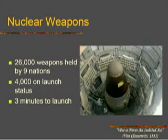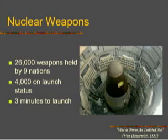Then we come to nuclear weapons — these weapons are in a class by themselves. They're not operated by military agencies but by separate agencies, and that's where you'll find them if you start doing research. It's now 26,000 weapons, and of those, 4,000 are in launch status — 2,000 held by the Americans and 2,000 held by the Russians.